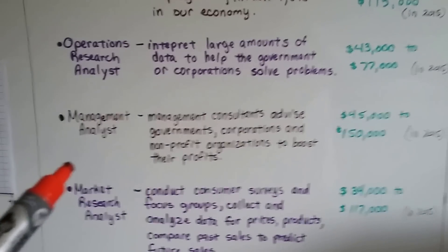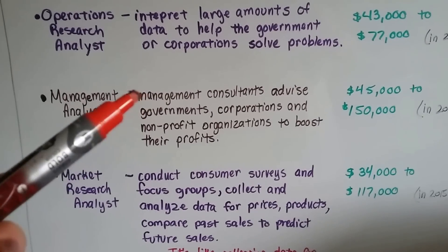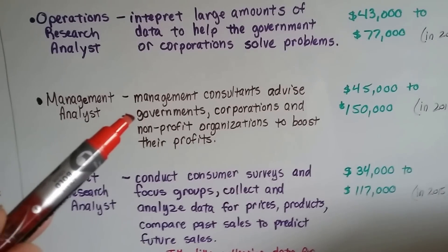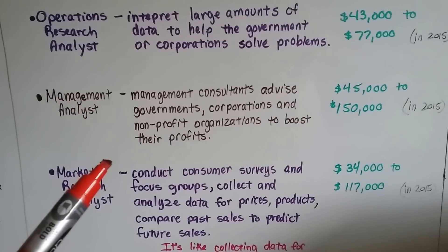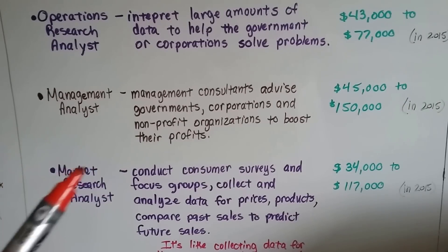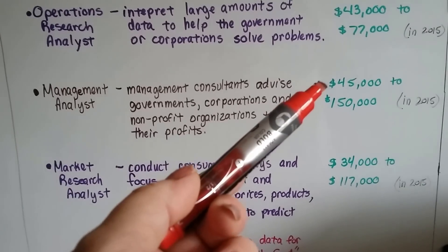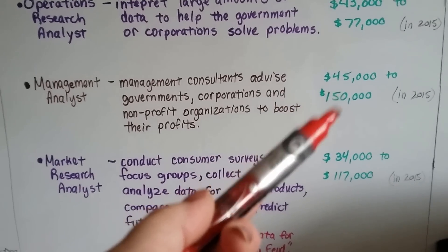A management analyst, those are management consultants. They can either work for a company or have their own management consultant company. And they advise governments, corporations, nonprofit organizations, like churches and stuff like that, to help them boost their profits. And they can make anywhere from $45,000 a year to $150,000 a year if they're really good.